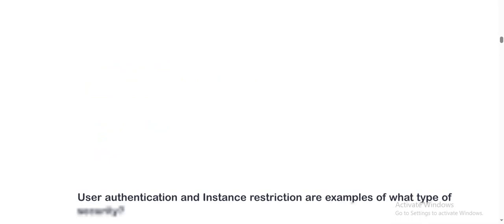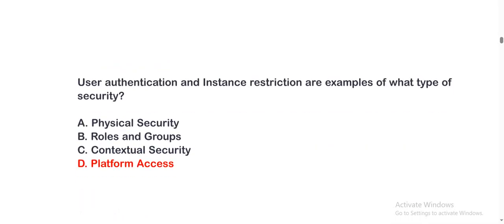My next question is: User authentication and instance restrictions are examples of what type of security? The options are: Option A, Physical Security; Option B, Roles and Groups; Option C, Contextual Security; Option D, Platform Access. The correct option is Option D.